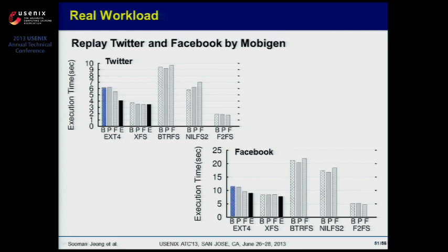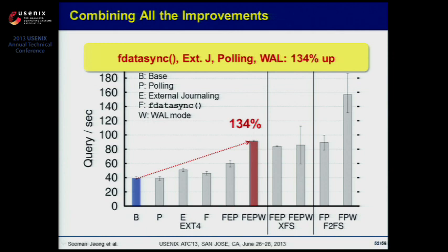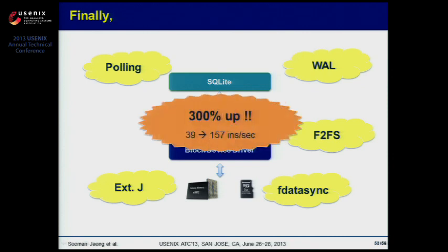We then tried to verify the optimization effect on a real workload. Using Mobizen, we captured and replayed the system calls of Twitter and Facebook. This replay result was similar to the previous SQLite experiment. Lastly, we applied all optimization techniques together. In EXT4, applying polling, external journaling, fdatasync, and WAL mode showed 134% performance increase compared to baseline. When the file system was changed to XFS or F2FS, the performance increase was even bigger. F2FS showed 300% performance increase compared to baseline.